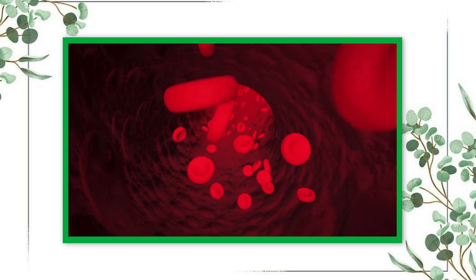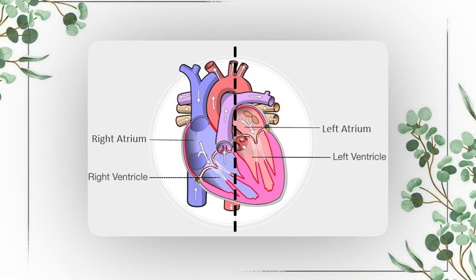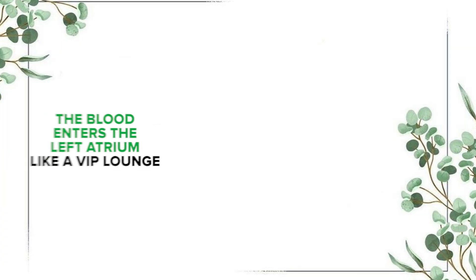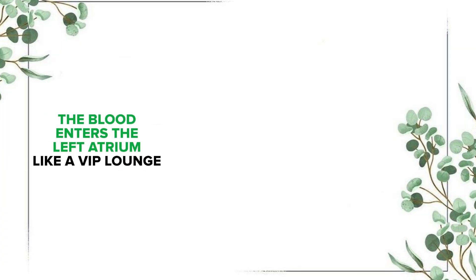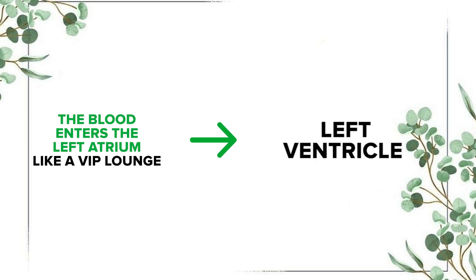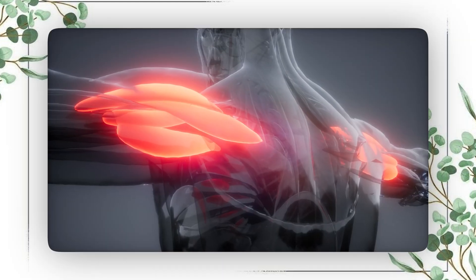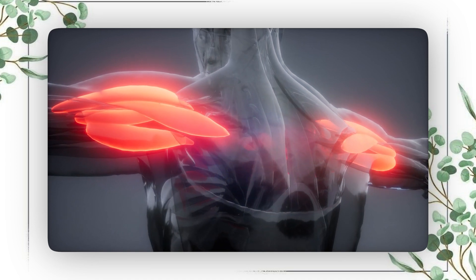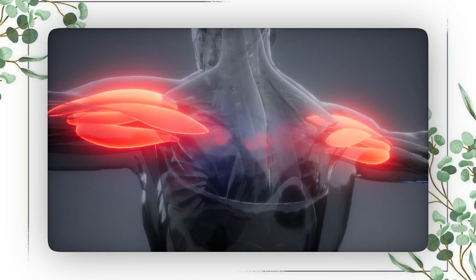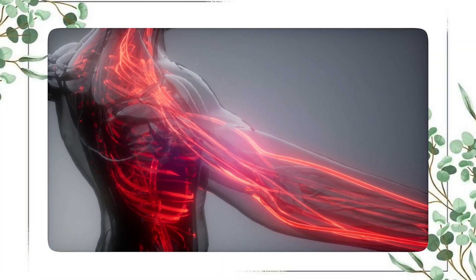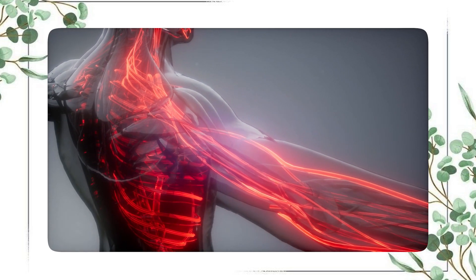Now that our blood is feeling fresh, it heads back to the left side of the heart. The left side is the VIP section where all the cool oxygenated blood hangs out. First, the blood enters the left atrium like a VIP lounge, then it flows into the left ventricle.